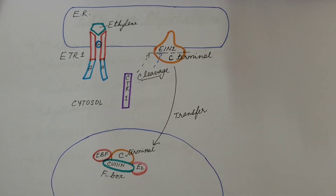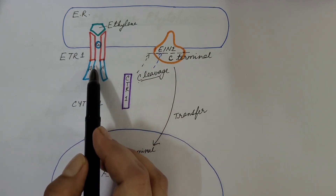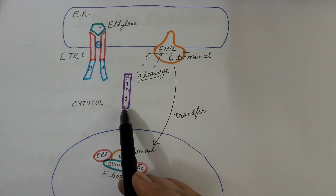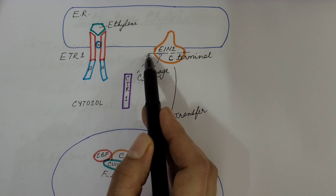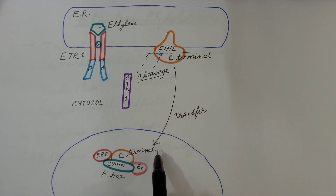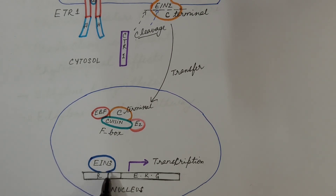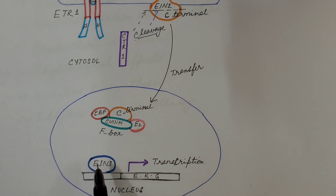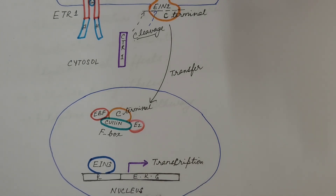To summarize the presence-of-ethylene scenario using the diagram: ethylene binds the ETR1 receptor, causing a conformational change. CTR1 no longer binds ETR1 and instead cleaves the C-terminal of EIN2. This C-terminal is transferred to the nucleus and binds F-box protein, occupying it. Since F-box protein is occupied, EIN3 (the transcription factor) cannot bind it and remains free. EIN3 then binds the regulatory region of the ethylene response gene, resulting in transcription and the physiological effects of ethylene in the plant.